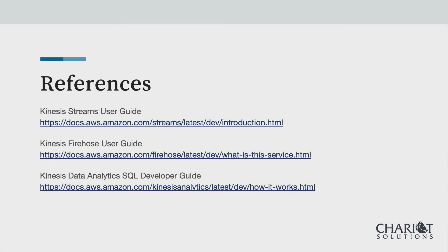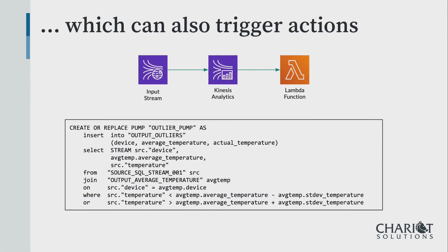This is a very short talk, but plenty of time for questions. The question is: what do you get in the Lambda event? The outliers output stream of this query contains device, average temperature, and actual temperature — you could use any of the input fields from either of the two joined sources. So the Lambda event will get a JSON message.